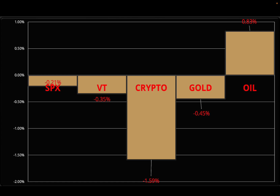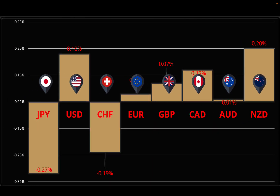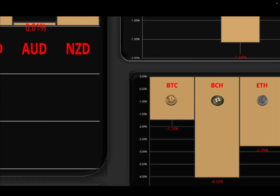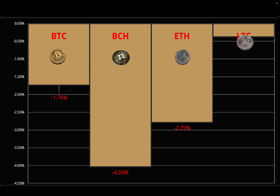Crypto and gold were also down slightly, and oil rebounded a little bit. Looking at currencies, the biggest losers on the day were the yen and the Swiss franc, whereas the biggest winners were the US dollar, the New Zealand dollar, and the Canadian dollar — some outperformance there by the kiwi for sure. The aussie was flat, euro more or less flat, and same with the pound. In crypto, Bitcoin Cash was the biggest loser today out of the major market cap cryptos we follow, followed by Ethereum and Bitcoin, with Litecoin more or less flat.